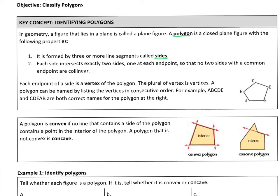The least amount of sides a polygon can have is three - triangle is the least. Each side intersects exactly two sides, one at each of its endpoints, so that no two sides with a common endpoint are collinear.